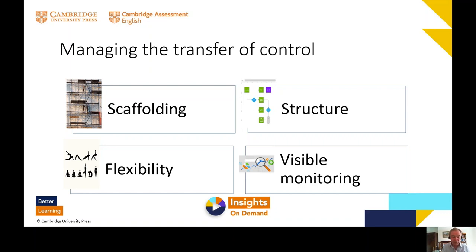The fourth point is visible monitoring — tracking progress so that students can see where they're struggling or where they're doing fine. This is often about keeping log books or portfolios as different ways of visible monitoring.